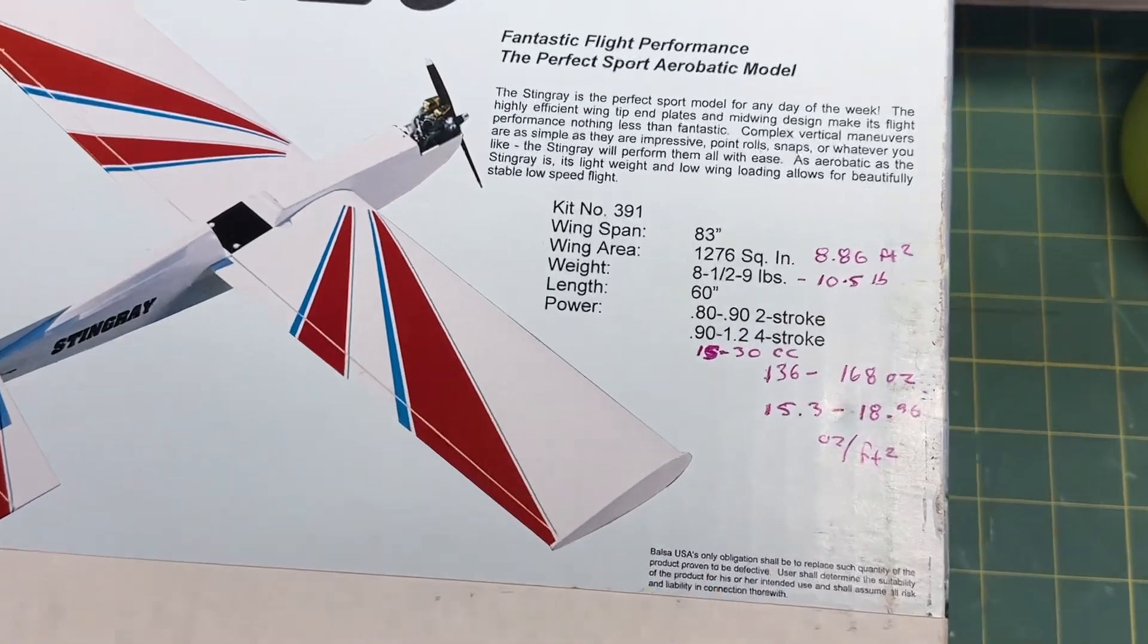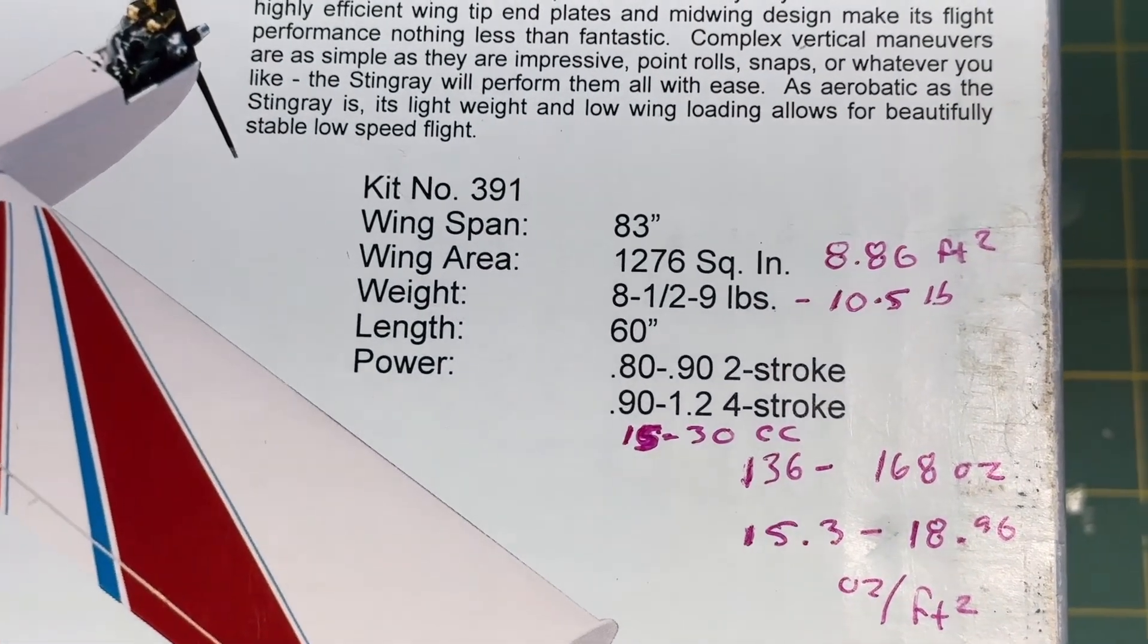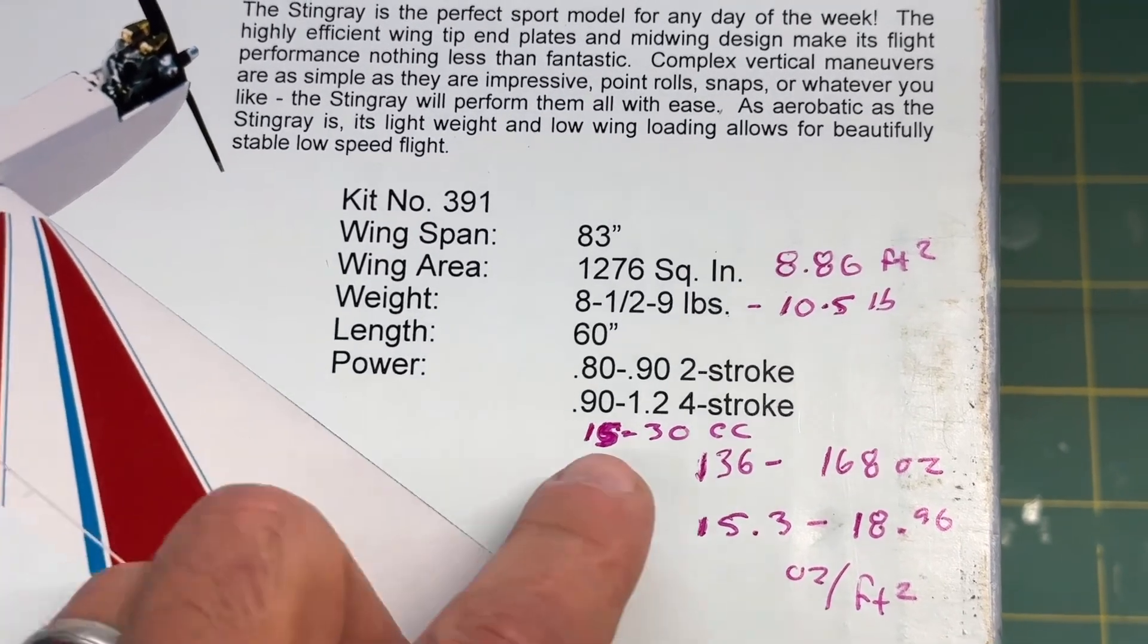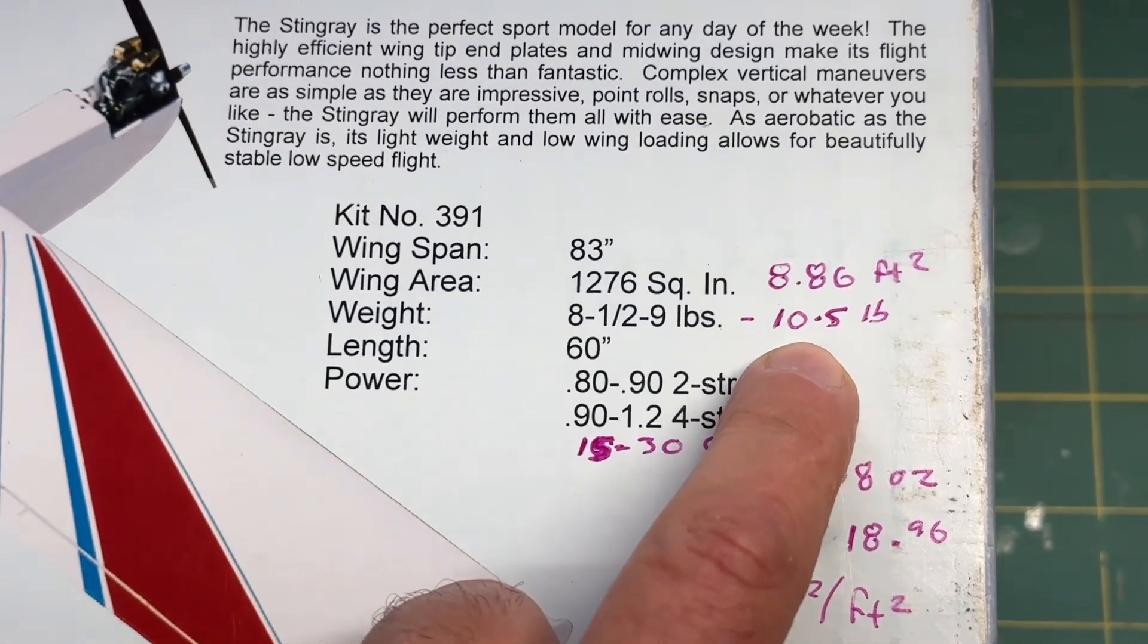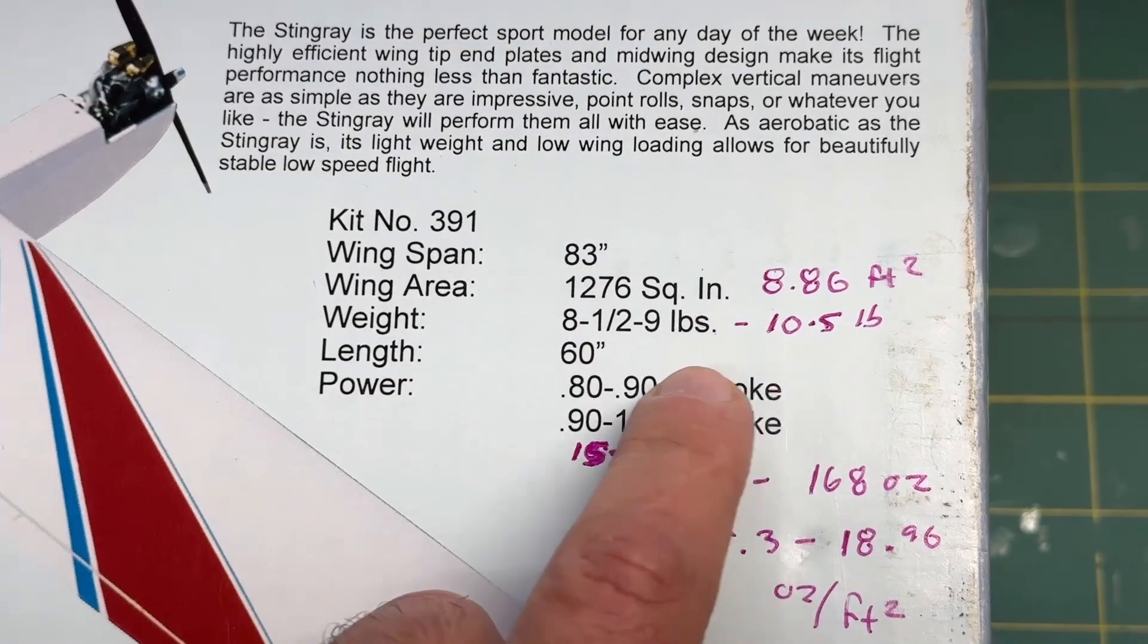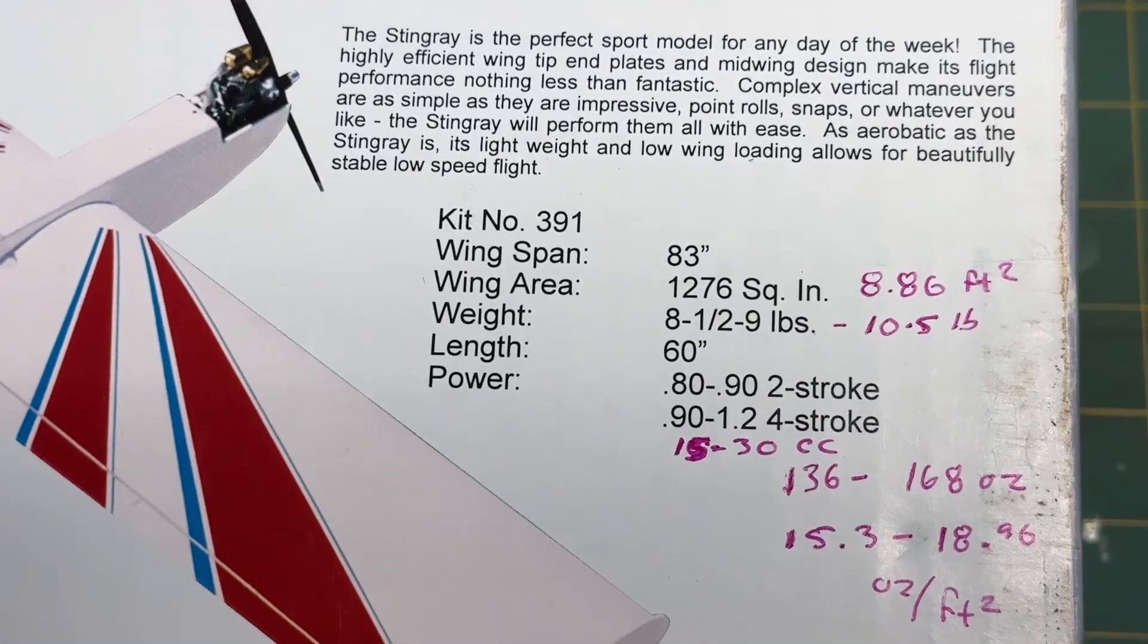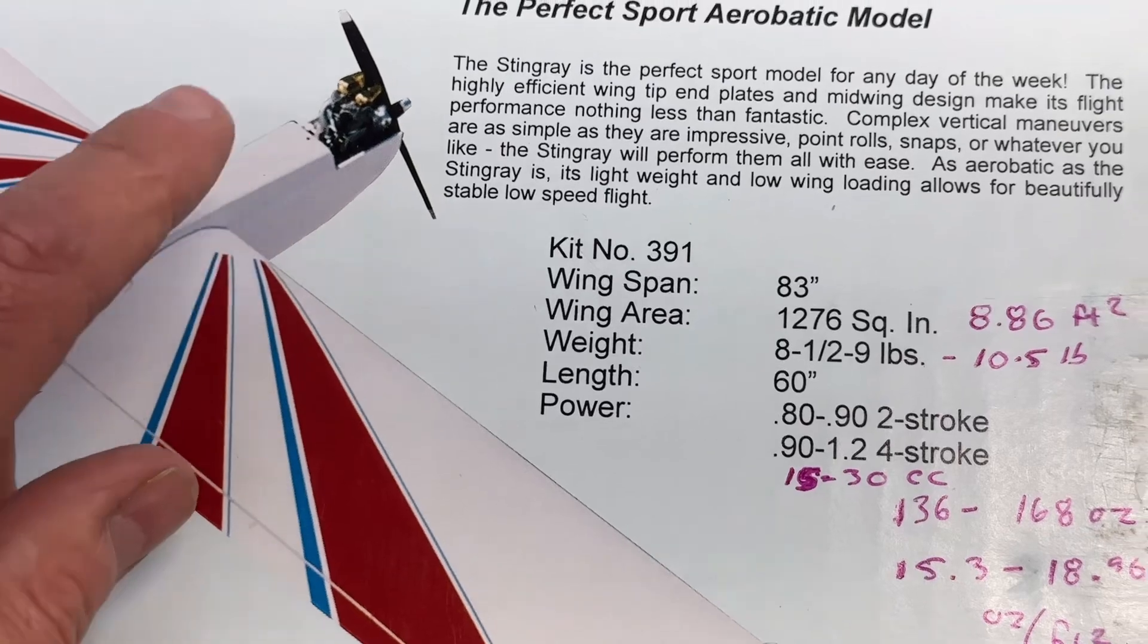Now if you look at the box specs, it has the weight as eight and a half to nine pounds. But if you go to the website, as I recall, it's up to ten and a half pounds. So the website has it a little bit heavier. It's probably because they added the use of the DLE 20 engine.